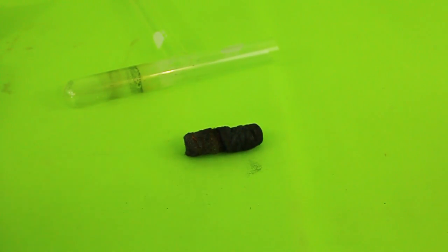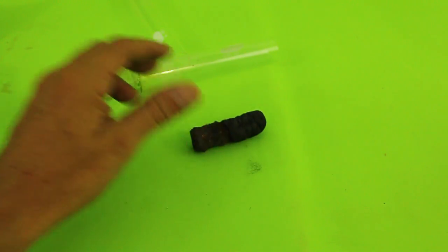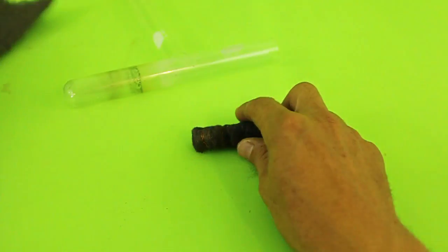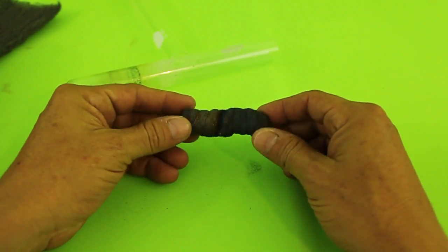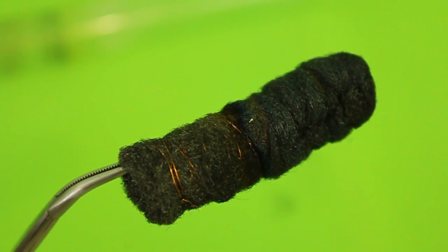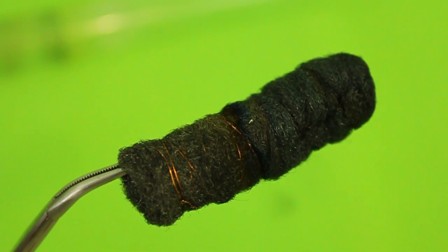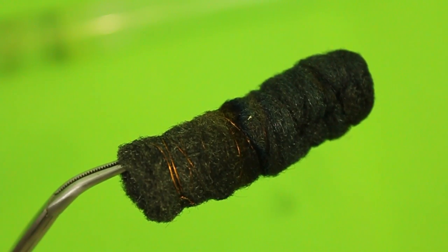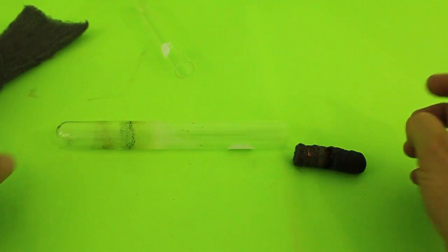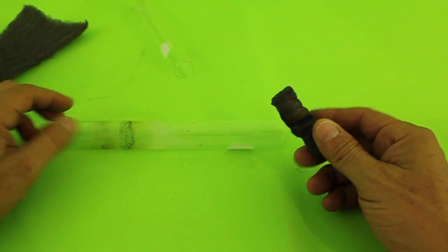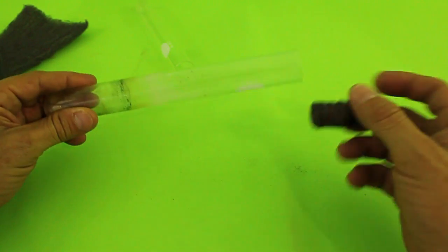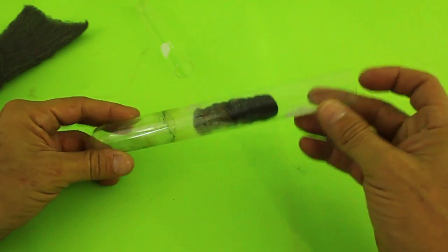We also need to make a displacer piston and for that we need steel wool. You will cut a section and roll it into the form of a cylinder. Put some fine copper wire around to prevent unwinding and to make it compact and as cylindrical as possible. The displacer must have a diameter slightly smaller than the inner diameter of the large test tube so that it can move freely inside.